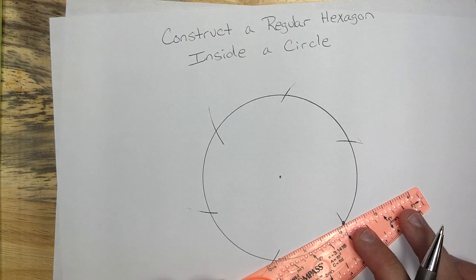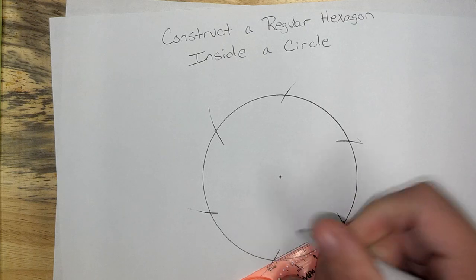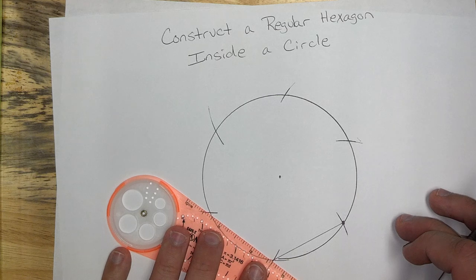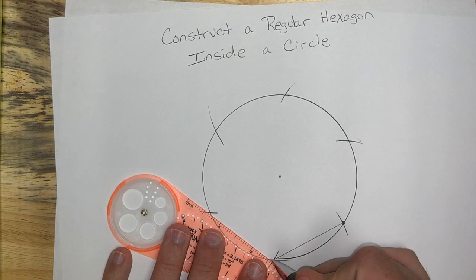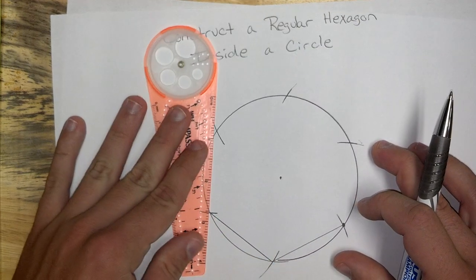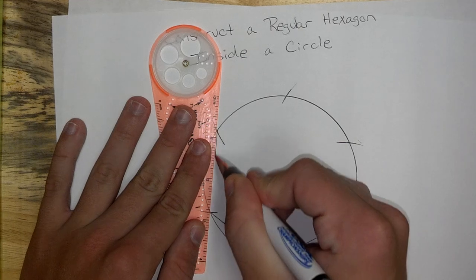If I connect them, that's going to give me a 6-sided shape, which is a hexagon. Not only that, but since my vertices of my hexagon here are evenly spaced, that's going to create a regular hexagon, where all of the angles and all of the sides of this hexagon are congruent.